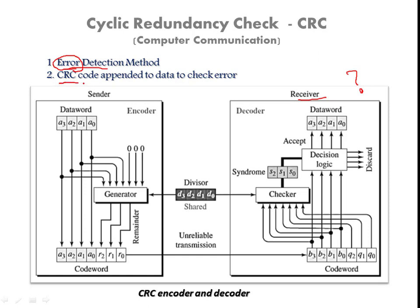We have a sender and a receiver. On the sender side, the encoding process is done — the actual data is appended with additional bits. These redundant bits are extra bits which are not mandatory for actual functioning, but they are useful for finding the error. The data word is appended with the CRC code — we perform a division process and the remainder is added to the data word. The data word plus the remainder together are called the code word.